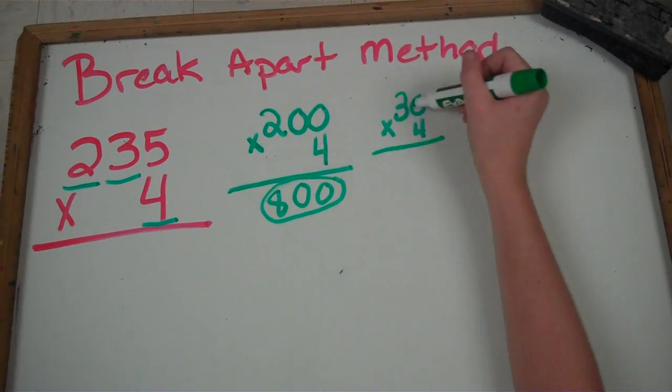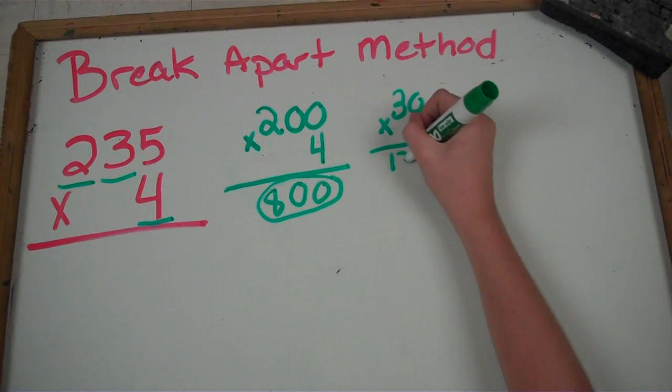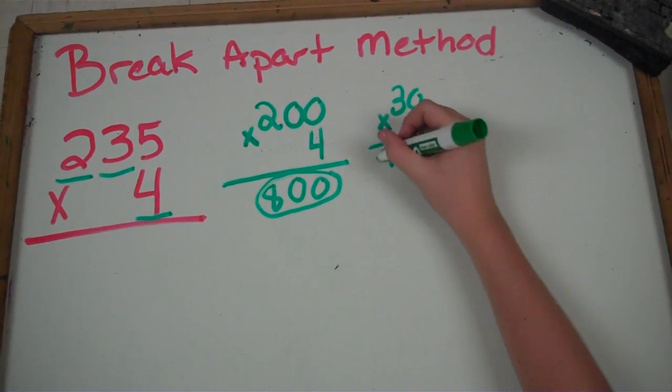Same thing with the zeros. So you can do 4 times 3 is 12. Bring down the zero from the 30, and you get 120.